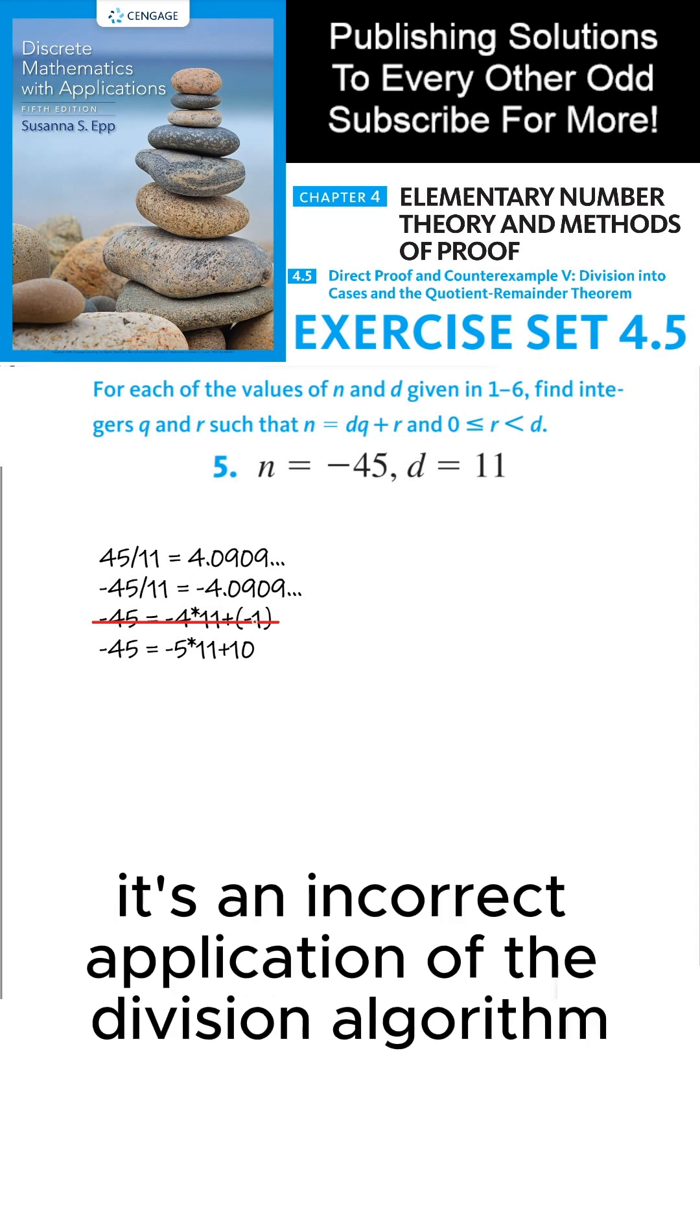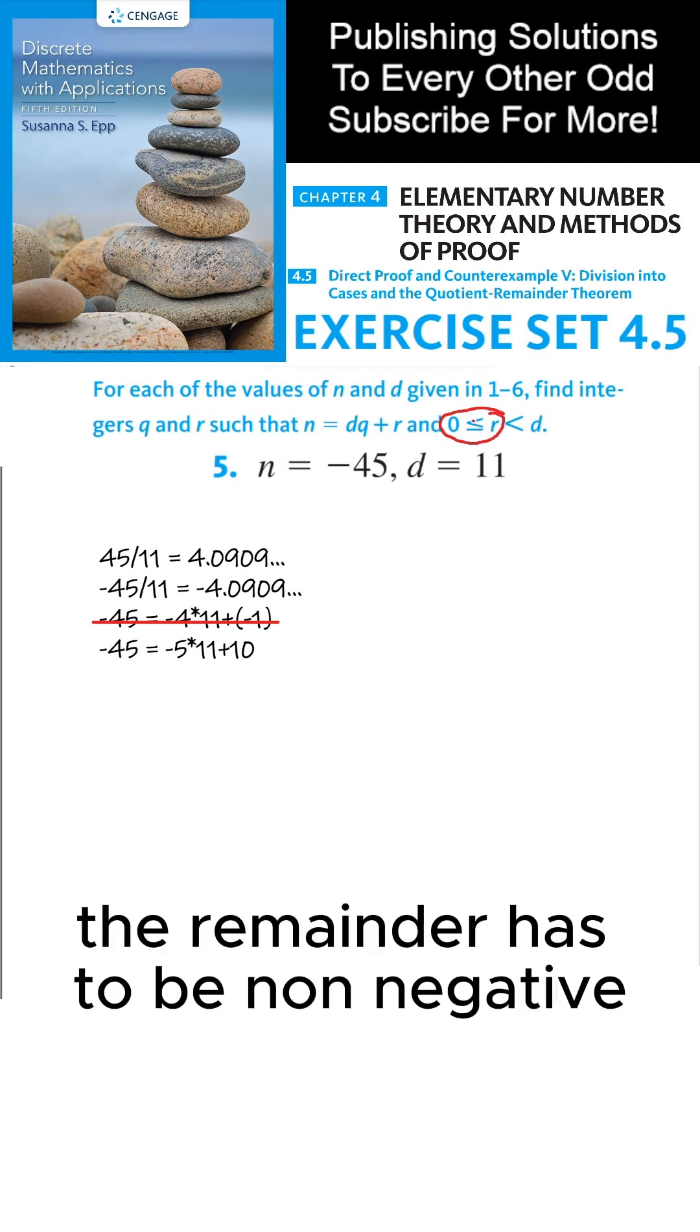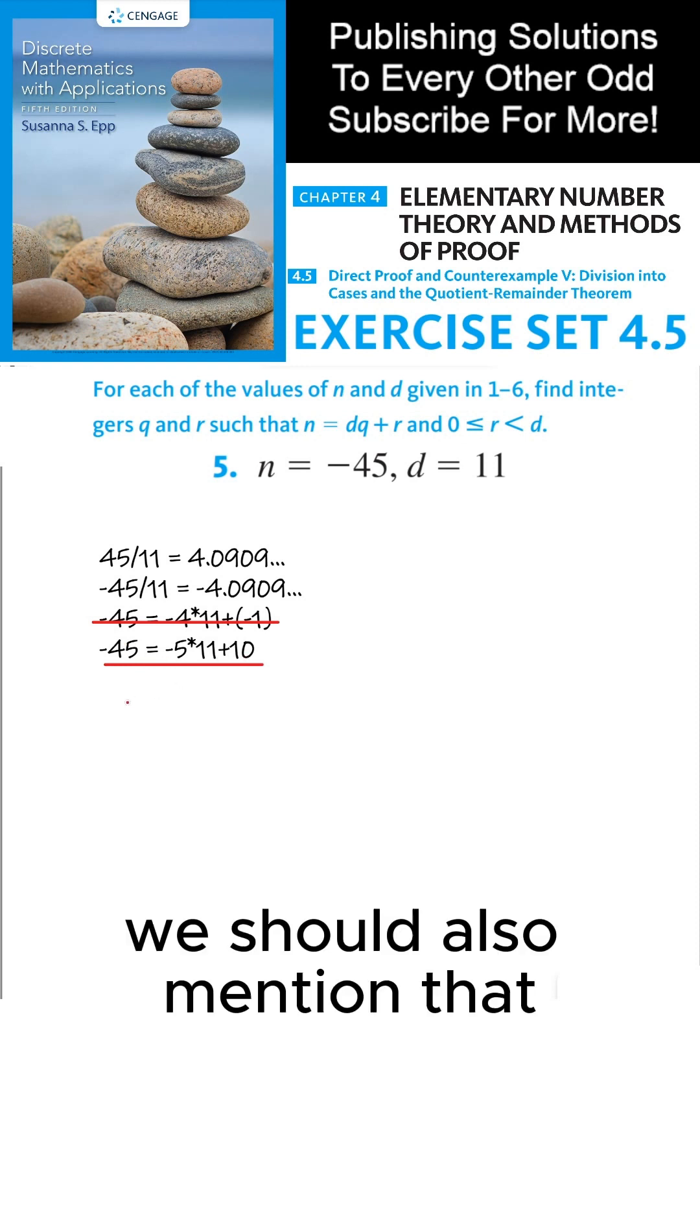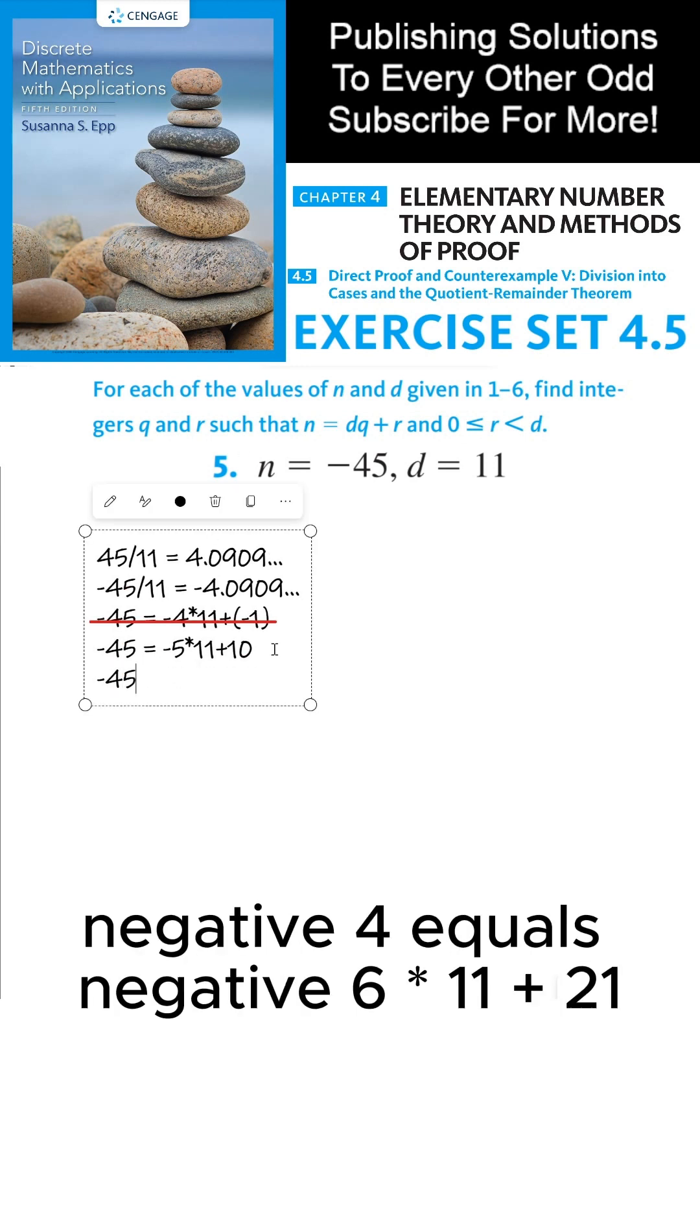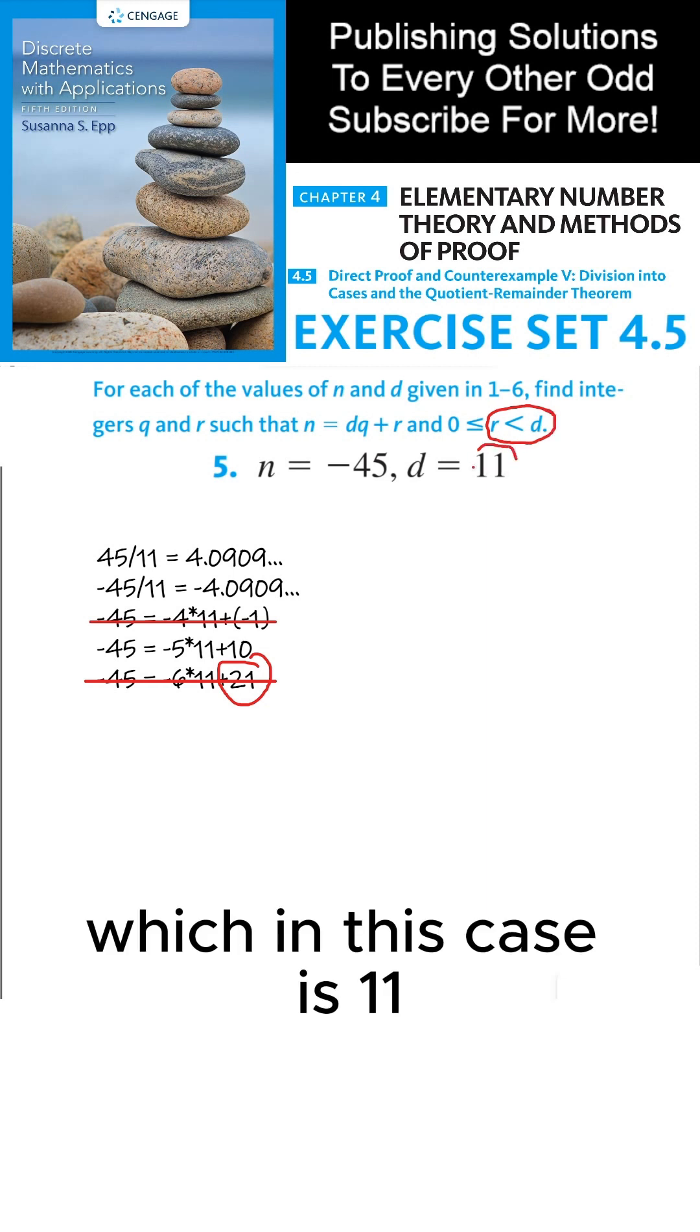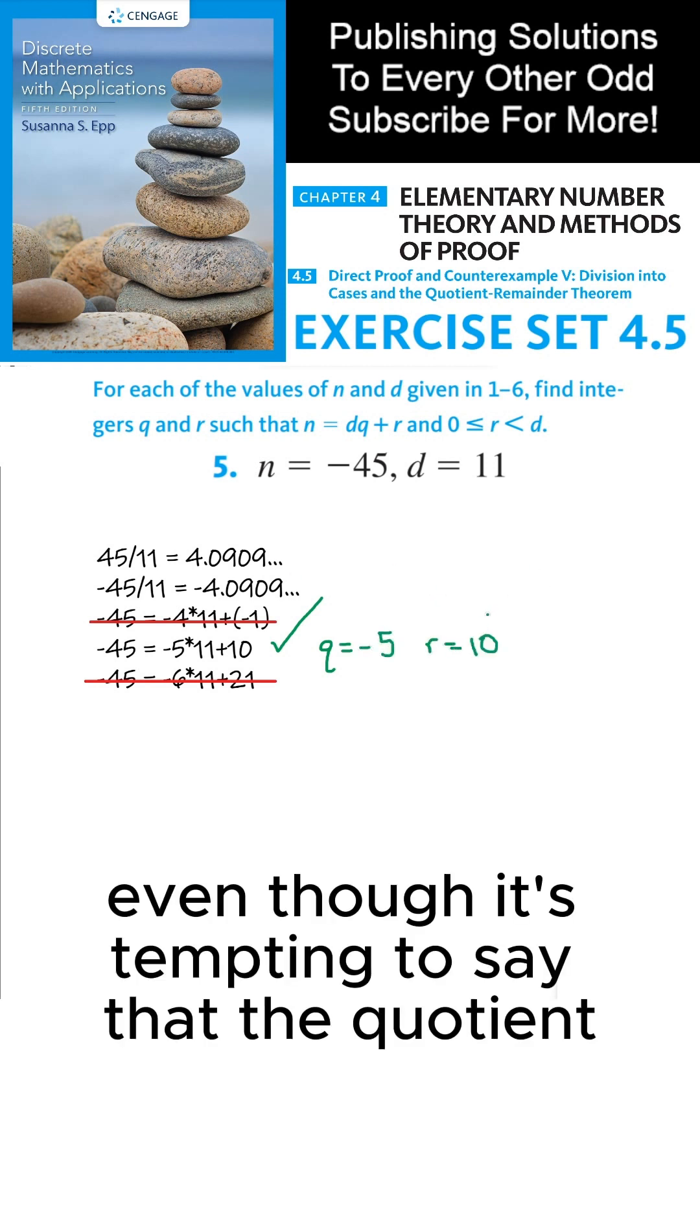It's important to understand that it's an incorrect application of the division algorithm if you have a remainder that's negative. The remainder has to be non-negative, at least zero. If we keep going, negative 45 equals negative 6 times 11 plus 21 doesn't work either because my remainder is too big. The remainder has to be less than d, which is 11. That's why the proper quotient q is negative 5 and r is 10, even though it's tempting to say the quotient is negative 4.